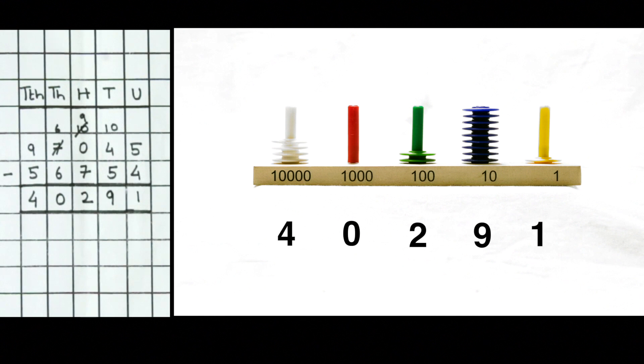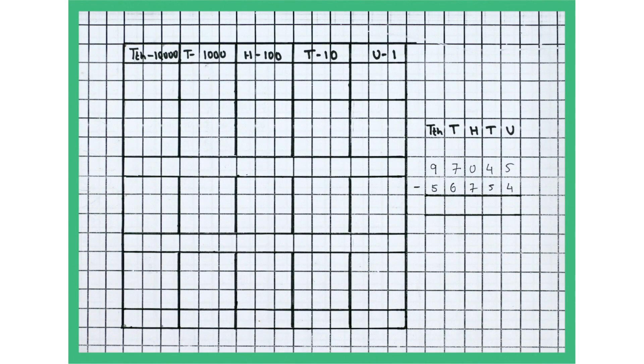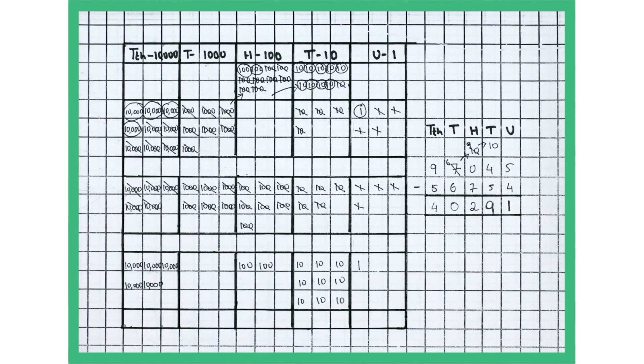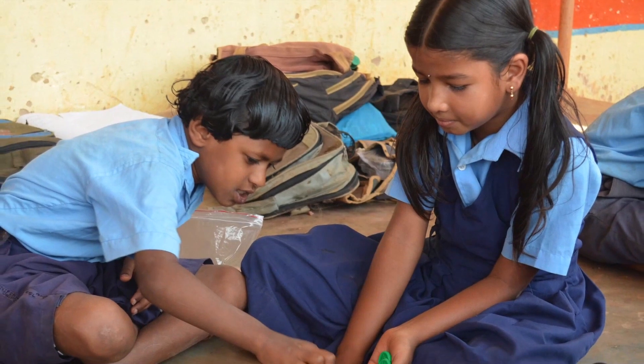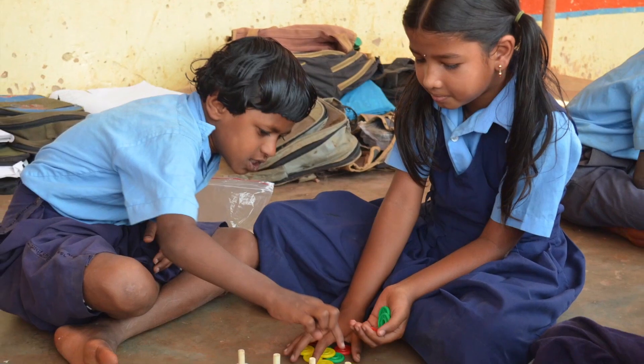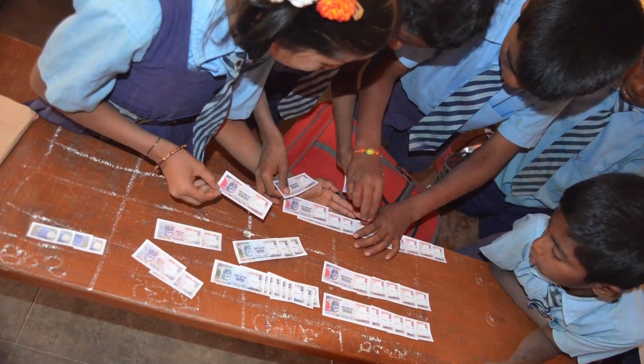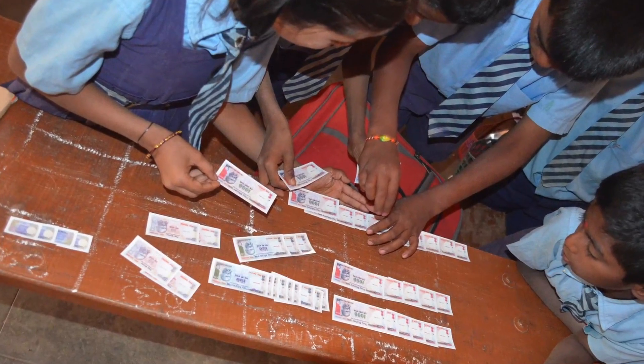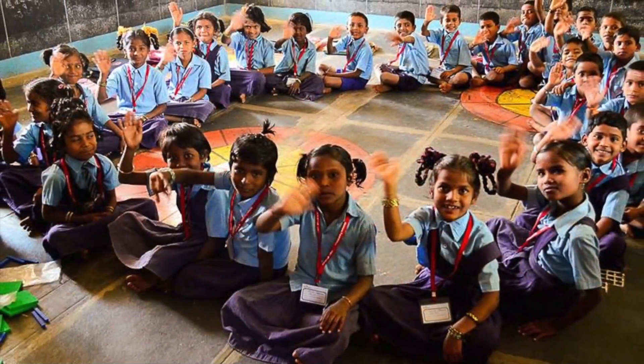For fluency, students must practice by working on square ruled paper following the steps as shown earlier. With practice, students will become confident of key subtraction concepts, especially if they work in groups, and they will be easily able to handle any problem in the textbook.